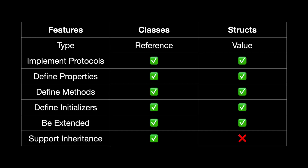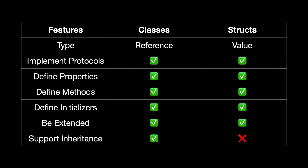What's the difference between a class and a struct? Classes are reference types and structs are value types. When you pass classes around in your program you're passing a reference to that object, so different parts of your program can share and modify it because they all point to the same place in memory. When you pass a struct around, what gets passed is a copy of that struct, so modifications don't affect the original. Both can implement protocols, define properties, methods, and initializers, and can be extended, but only classes support inheritance.